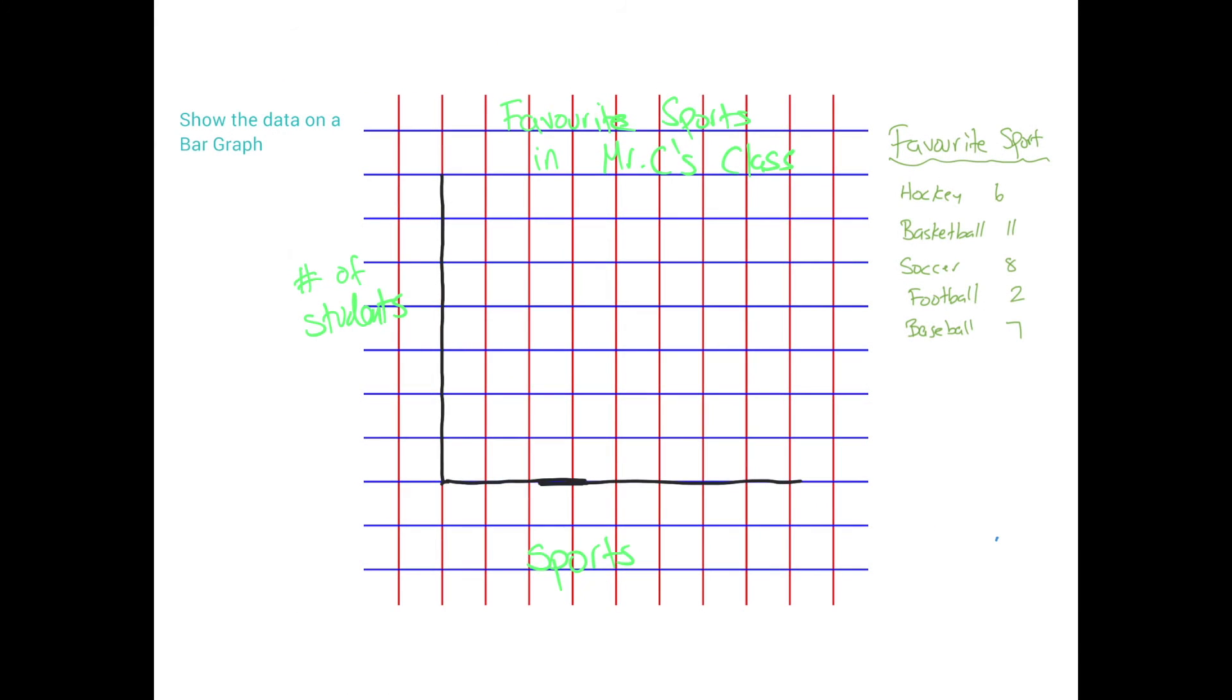The next thing we need to do is put these sports at the bottom. So on the x-axis. Because we have five sports, we need to fill this in carefully. It's going to overlap a little bit here.